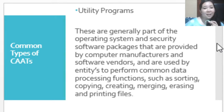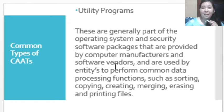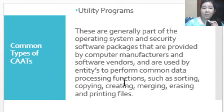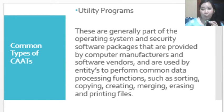Another type of CAAT is utility programs. These are generally part of the operating system and security software packages, provided by computer manufacturers and software vendors. They are used by the entity to perform common data processing functions such as sorting, copying, creating, merging, erasing, and printing files.